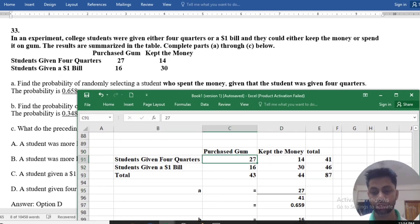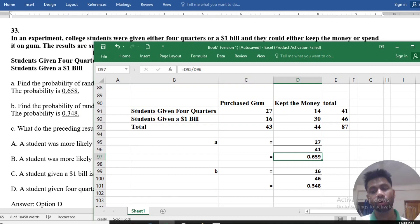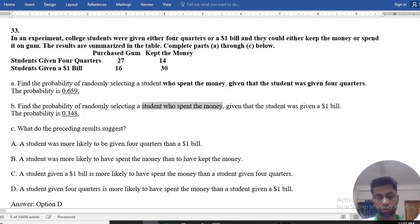From the table we get who spent the money given four quarters. Spent the money is 27 given that 41. The result is 0.659.